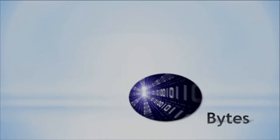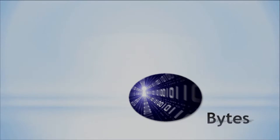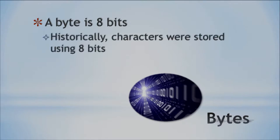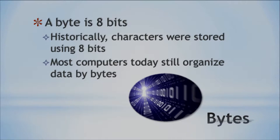Let's talk about how to group these things together. You take one bit, get eight of them, and you get bytes — maybe some early computer scientist sense of humor there. A byte is made of eight bits, and historically, that's how they stored characters on a computer. Even today, a lot of computers still organize data by the byte — eight ones or zeros in one byte.